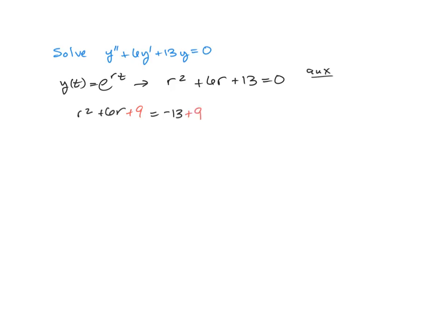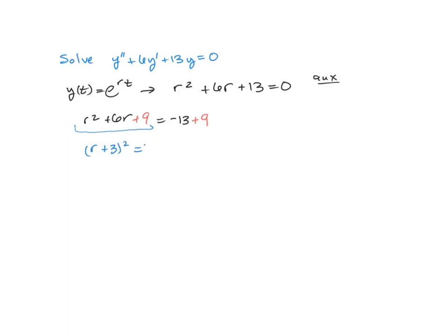In doing so, your left-hand side is going to be a perfect square trinomial: (r + 3)². And on the right-hand side, -13 + 9 makes -4.